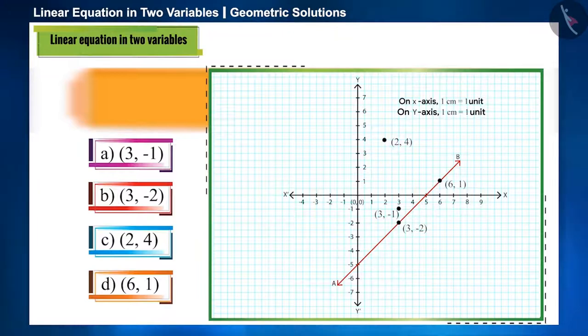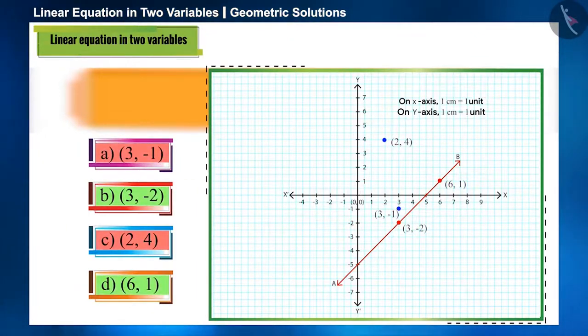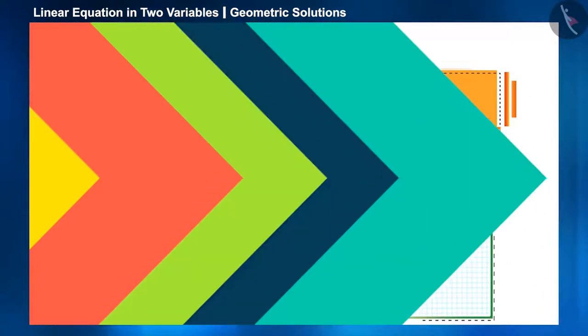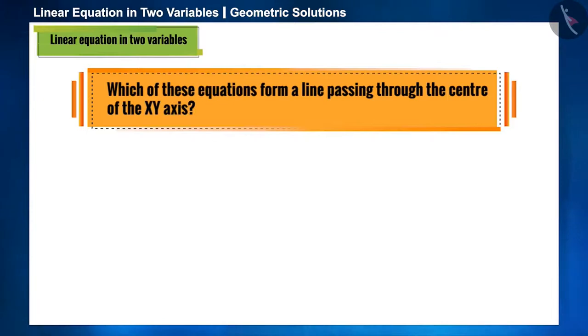Here, two points (3, -2) and (6, 1) are on this line. That means both these points are solutions of this equation.